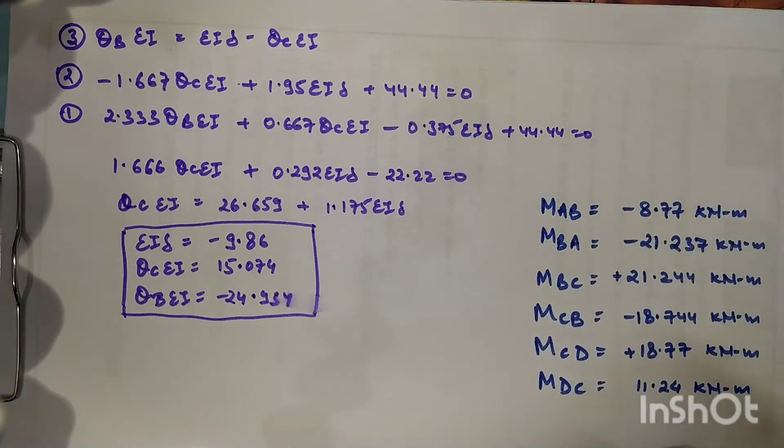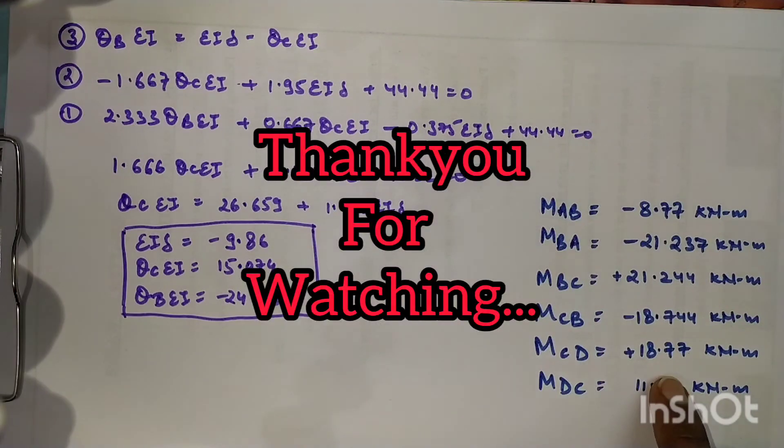Your BA-BC values are equal and opposite, and CB-CD values are equal and opposite. Thank you for watching.